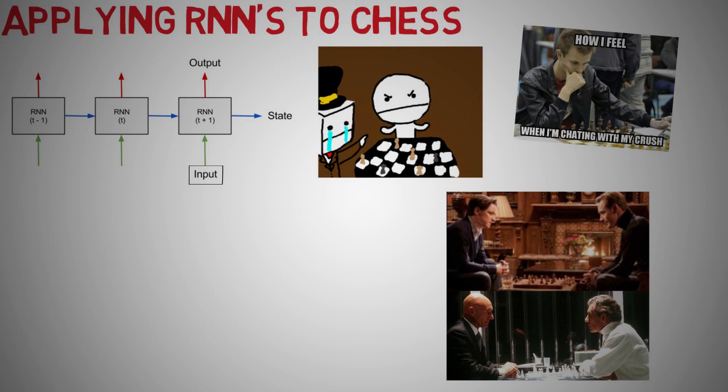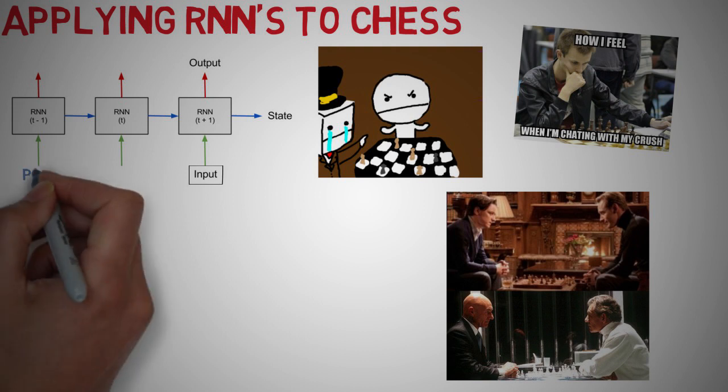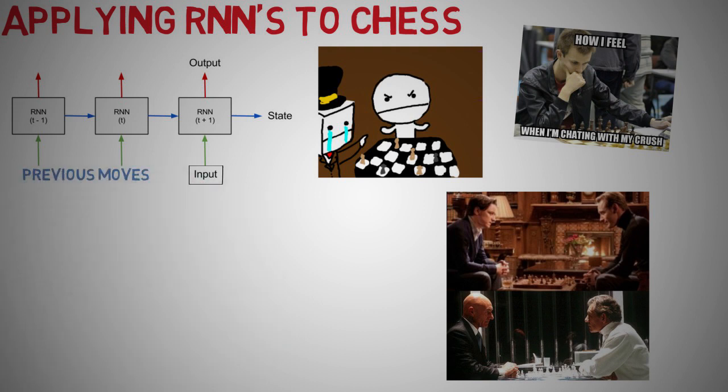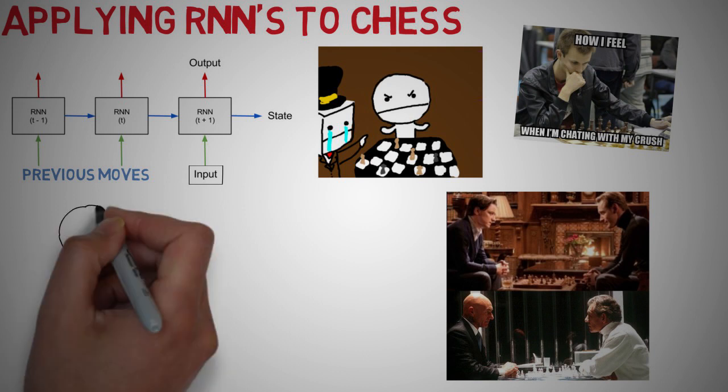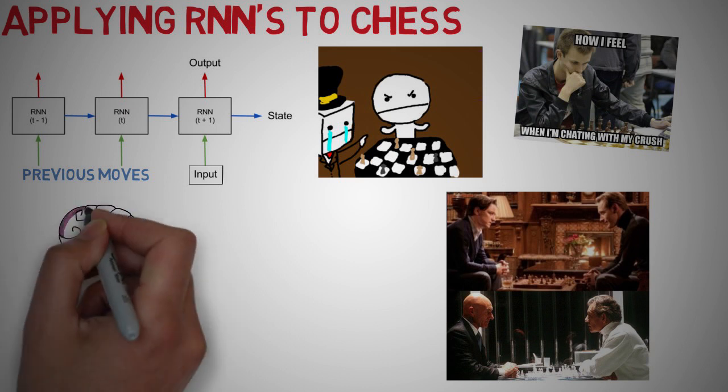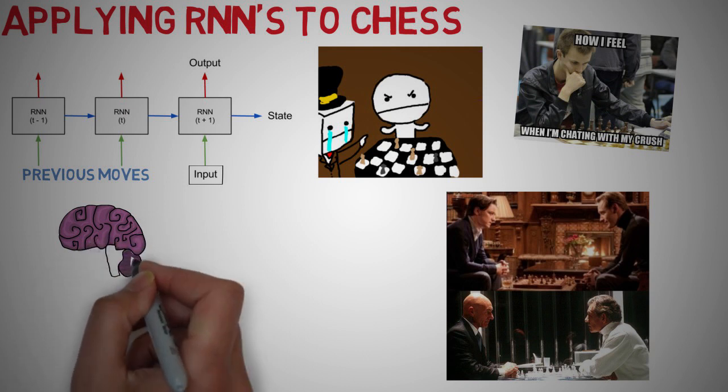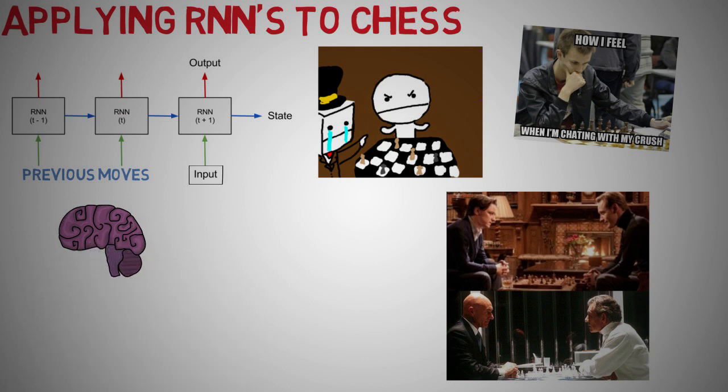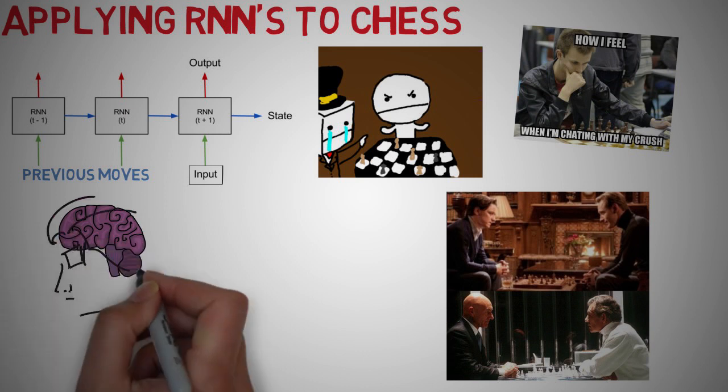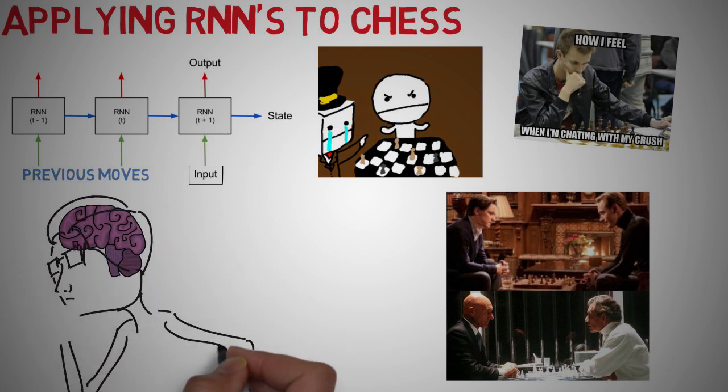This is where RNNs come into play. RNNs would feed the data from previous iterations into the nodes of the network at the current iteration thus allowing it to have some memory of events that occurred. This element of remembering what moves the opponent made can now help the network deduce his or her intentions with each progressive move. Sort of like building up an intuition based on past experiences and events. We'll touch on a few more significant applications later in this lecture.